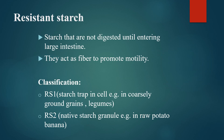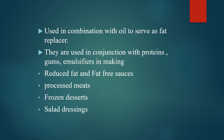Resistant starch refers to starches that are not digested until entering the large intestine. They act as fiber to promote motility and may be of two types: RS1 and RS2. RS1 is starch trapped in cells, coarsely ground in grains and legumes. RS2 is native starch granule found in raw potato and banana. These starches may be used in combination with oil to serve as a fat replacer, and are used in conjunction with proteins, gums, and emulsifiers in making reduced-fat and fat-free sauces, processed meats, frozen desserts, and salad dressings.